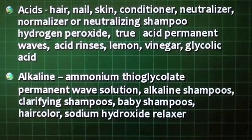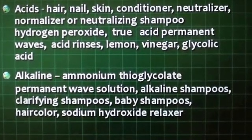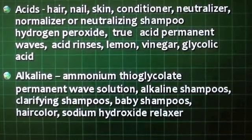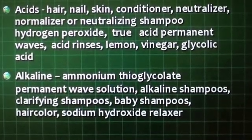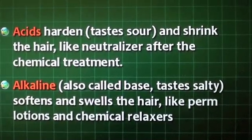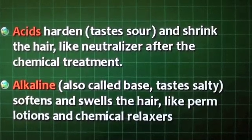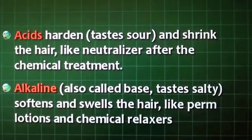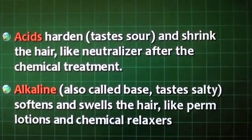Alkaline examples include ammonium thioglycolate permanent wave solution, alkaline shampoos, clarifying shampoos, baby shampoos, hair color, and sodium hydroxide relaxers. Acids harden and shrink the hair, like a neutralizer after chemical treatment, and usually taste sour. Alkalines, also called bases, soften and swell the hair, like perm solution and chemical relaxers.